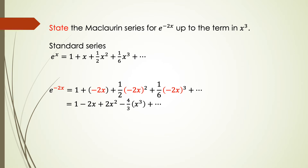So the Maclaurin series for e^x equals 1 plus x plus 1 over 2 x² plus 1 over 6 x³ and keeps going to higher powers of x.